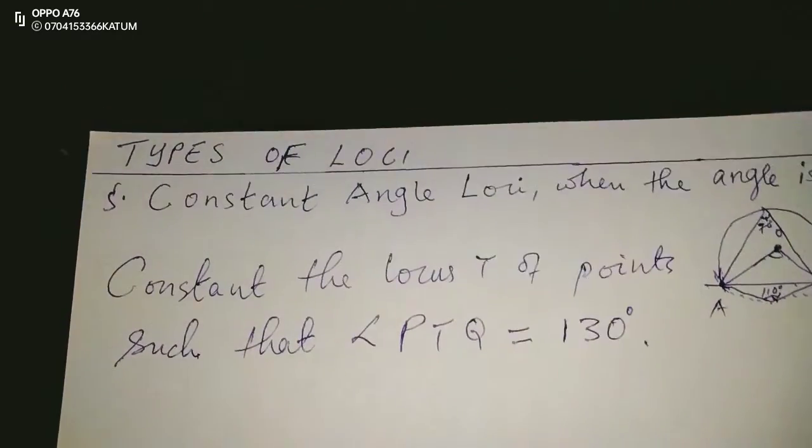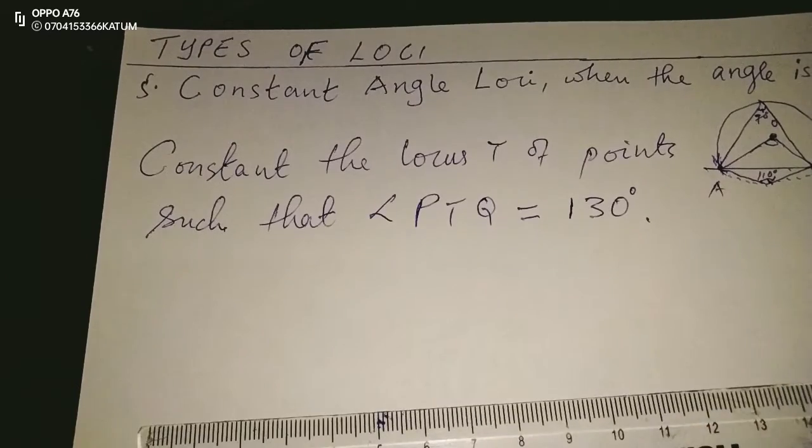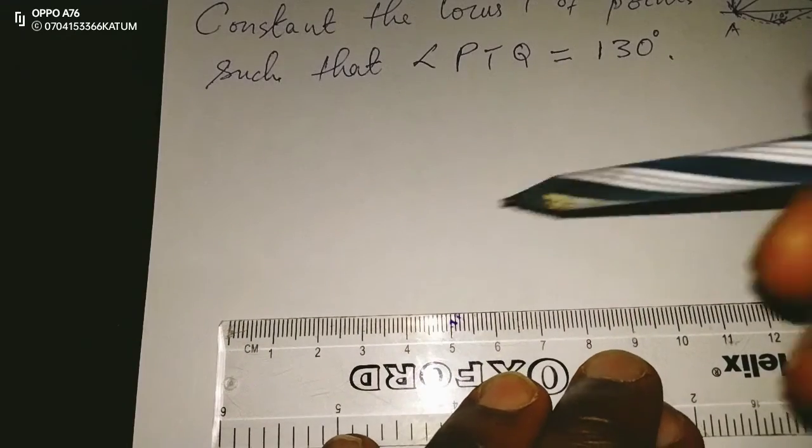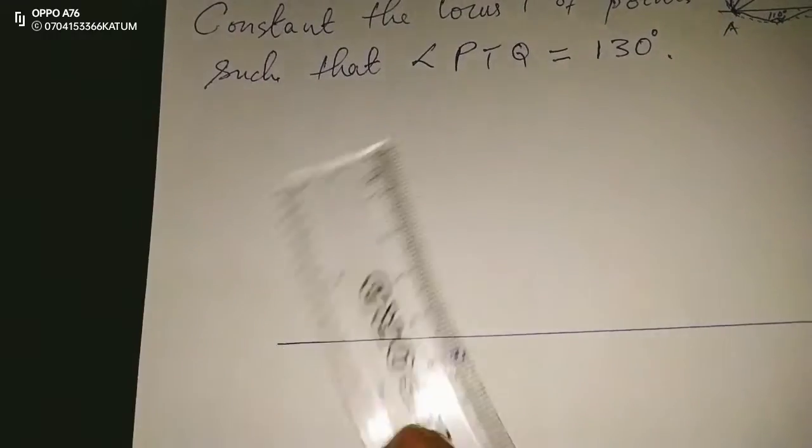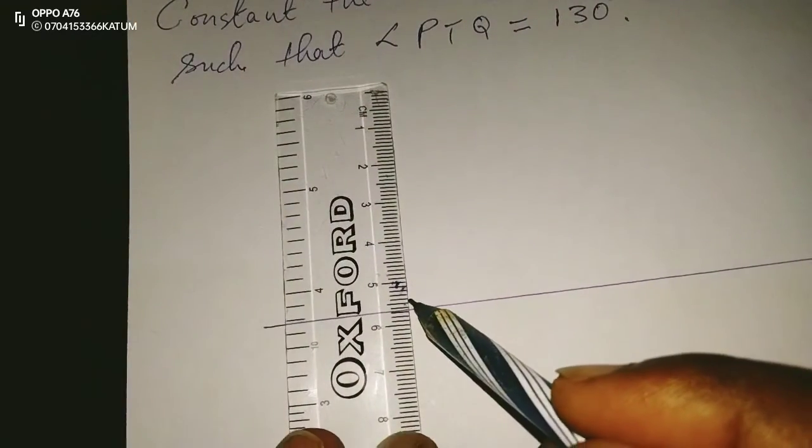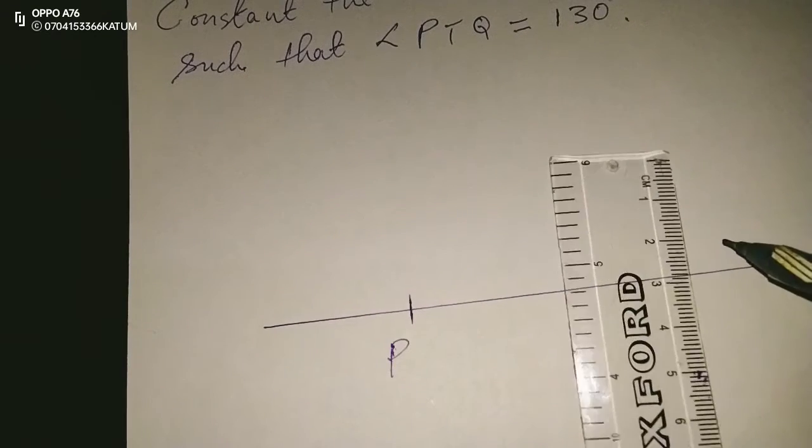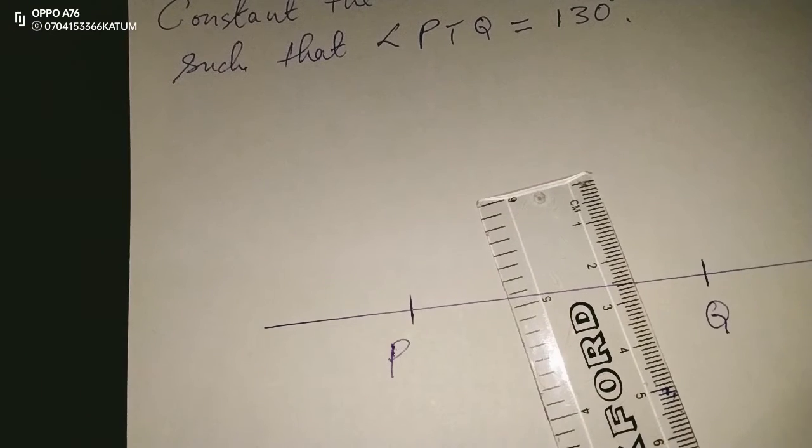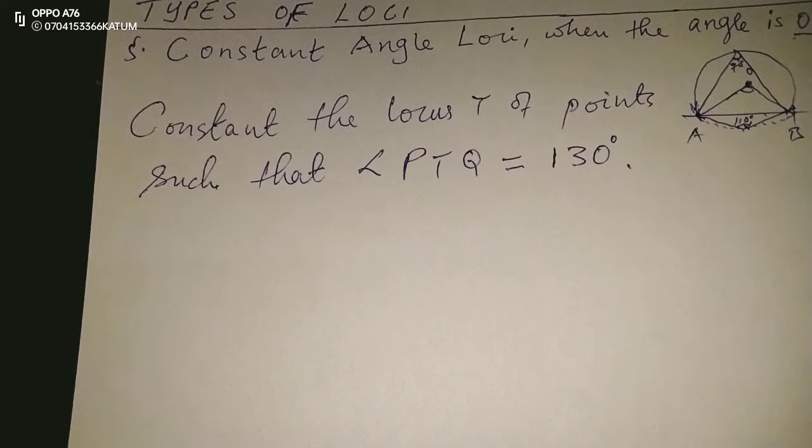So how do we go about this one? We make a straight line. Then now we mark this point as P and the other point here is Q.